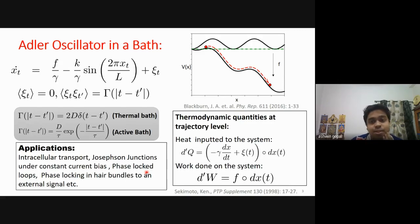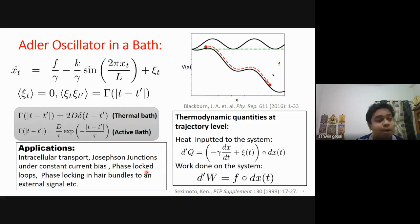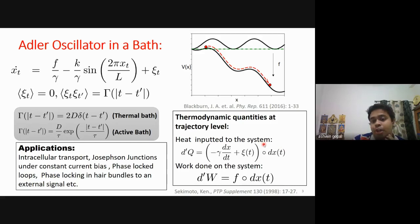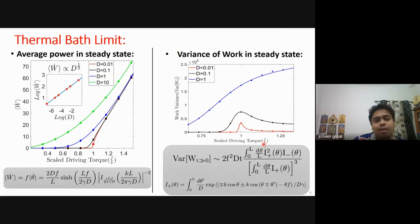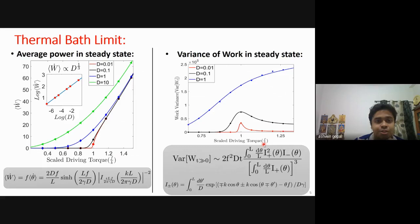Since we are studying thermodynamic quantities, we use the tools of stochastic thermodynamics to obtain thermodynamic quantities at the mesoscopic scale. These thermodynamic quantities are random variables depending on individual trajectories. We use Sekimoto's definition for defining heat and work. First, since tau tending to zero gives the thermal bath limit, we discuss the results derived in the thermal bath.